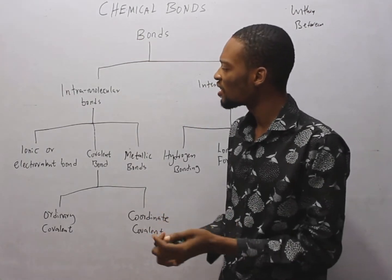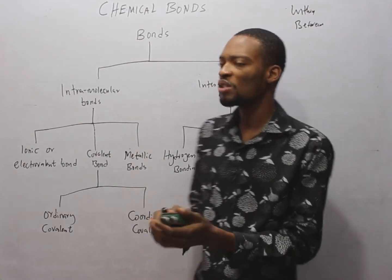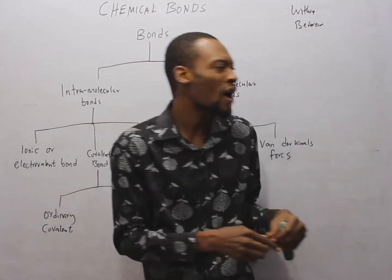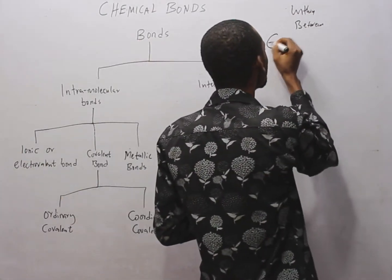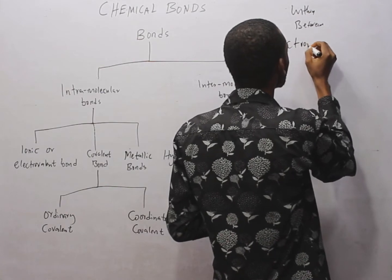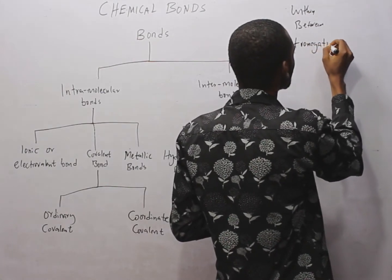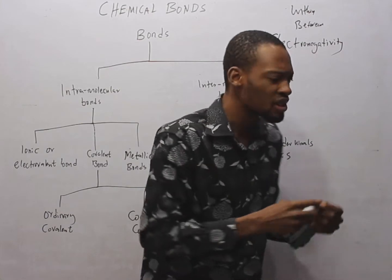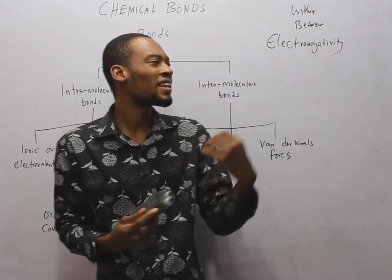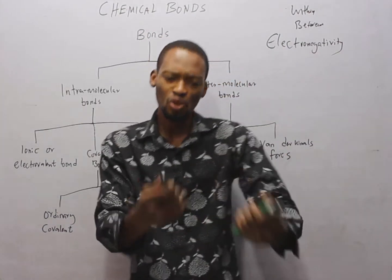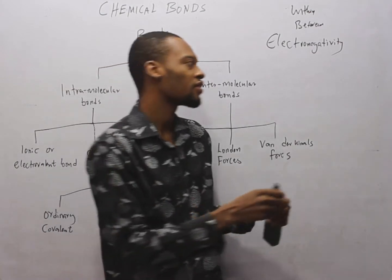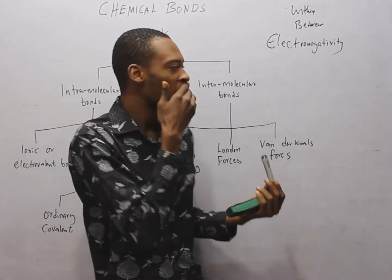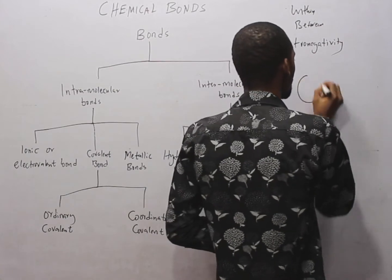An ionic or electrovalent bond is a bond between two elements whose electronegativity difference is wide. Electronegativity is the property of an atom in a molecule to attract electrons to itself.